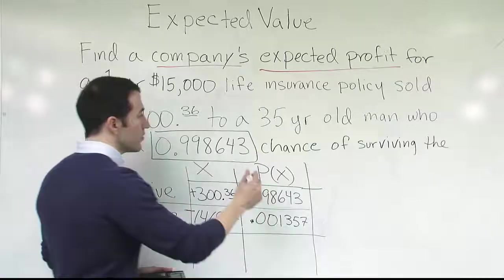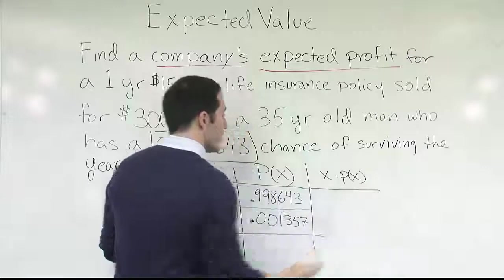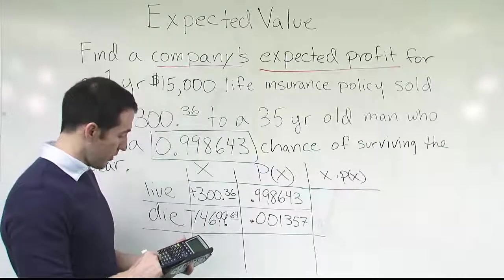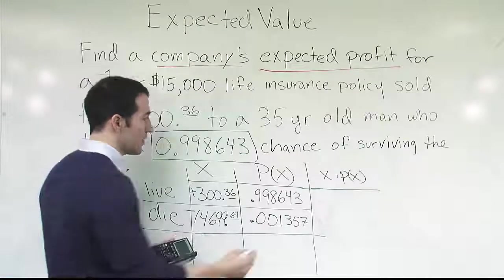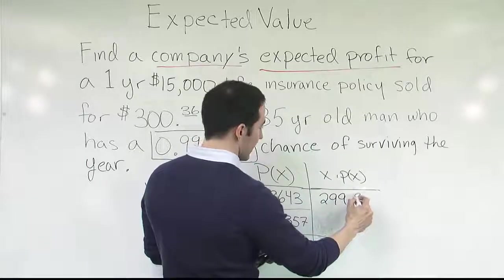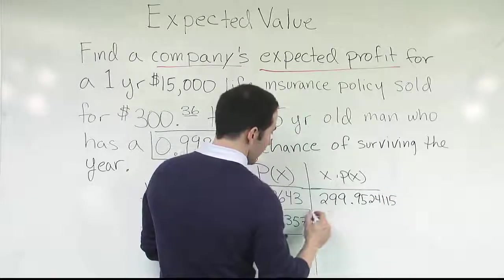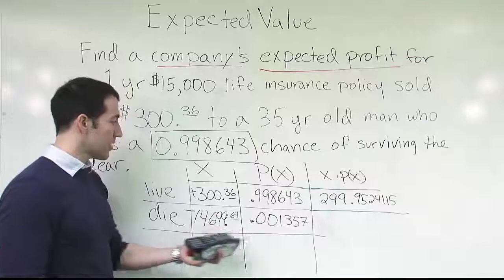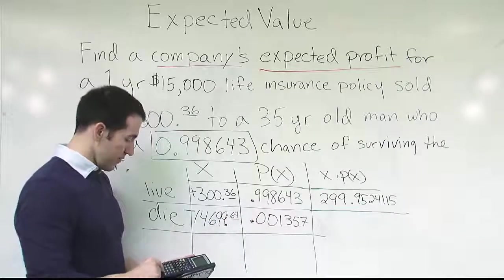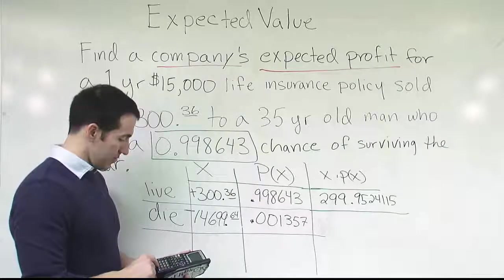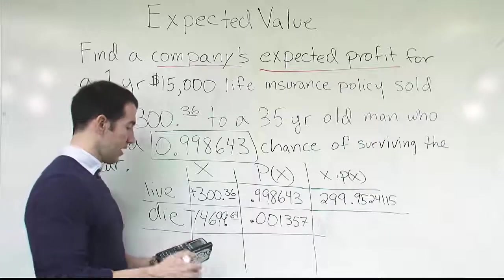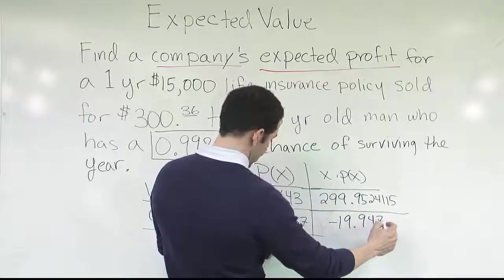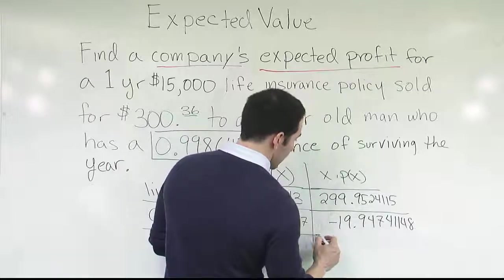To form the average, we do x times p(x) — we multiply straight across, the x values times the probability values. So that's $300.36 times 0.998643, which gives us $299.9524115. Then we multiply negative $14,699.64 times 0.001357, which gives us negative $19.9474114. We're carrying all the decimal places because we'll round off at the end of the problem, not before.